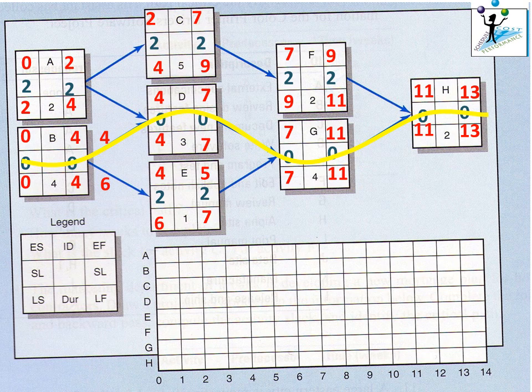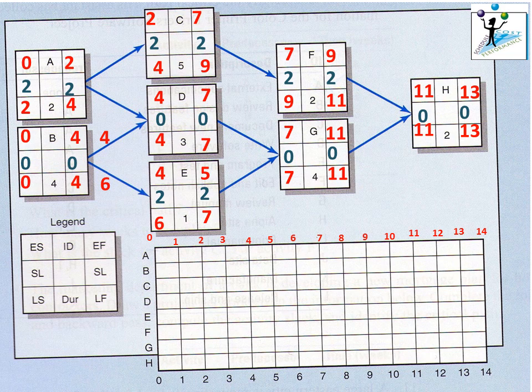Once you have identified the forward and backward pass results and calculated float or slack, you can identify the critical path — the path comprising activities with zero float. Activities B, D, G, and H form the critical path. As a project manager, you must ensure none of these activities are delayed, as any delay would push out the project completion date.